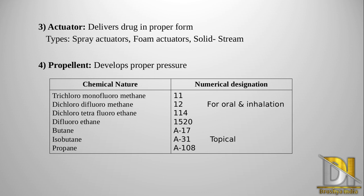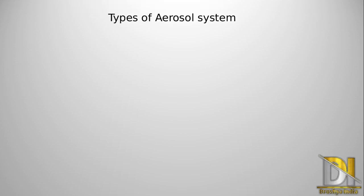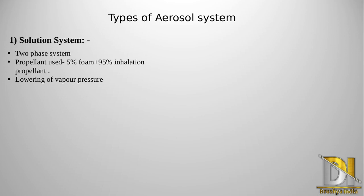Now we will see different types of aerosol systems. The first is the solution system, which is a two-phase system. The propellants used are 5% foam plus 95% inhalation propellant — the inhalation propellants being those with numerical designations 11, 12, and 114. In solution system, lowering of vapor pressure is done.